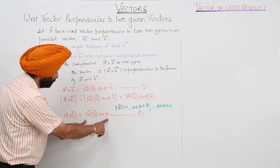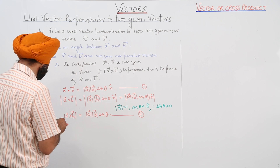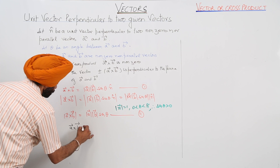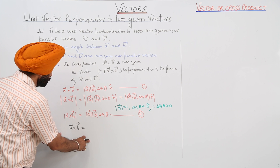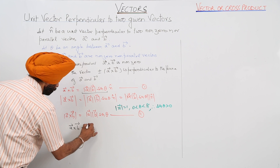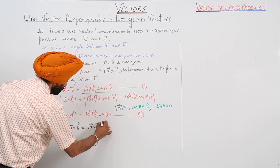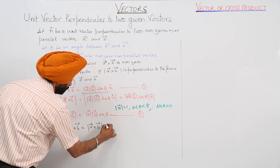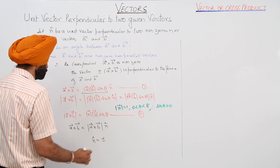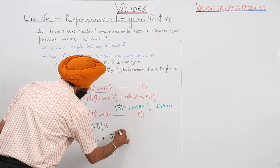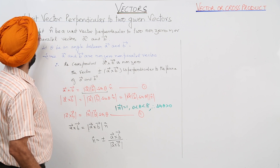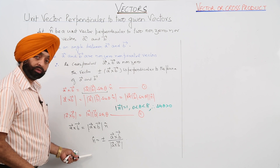We place the value from Equation 2 into Equation 1. Equation 1 becomes: the cross product of vector a and vector b equals the modulus of (a × b) times the unit vector n̂. Therefore, unit vector n̂ equals plus or minus (a × b) divided by the modulus of (a × b). This gives the unit vector perpendicular to two given vectors.